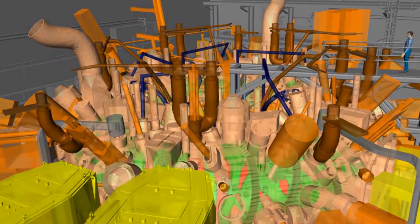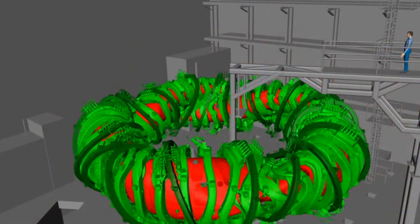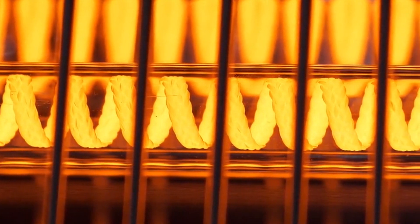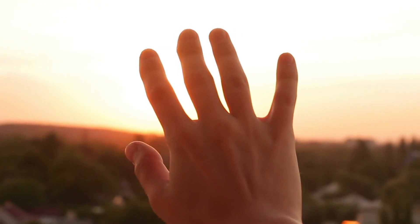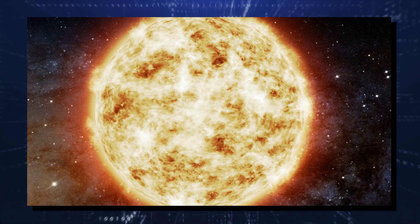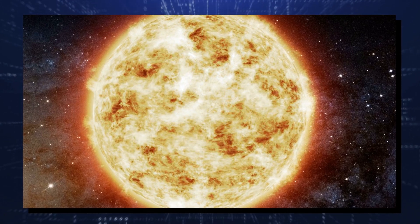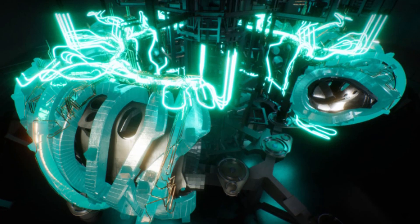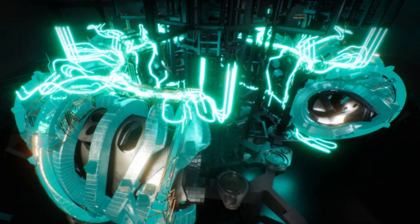In 2015, the Wendelstein 7X, like a tiny star, showed it can keep helium ions super-hot for a bit. Later, they cranked up the heat to a crazy 40 million degrees Kelvin, much hotter than the sun. The sun's surface is a chilly 5,505 degrees Celsius in comparison. Imagine how super-powerful the Wendelstein 7X is. It's mind-blowing.